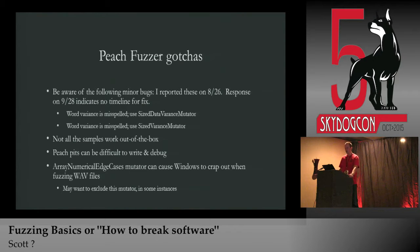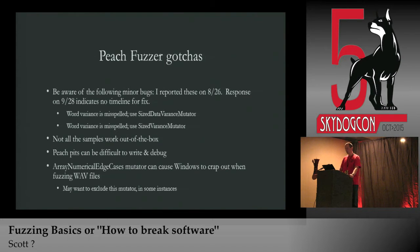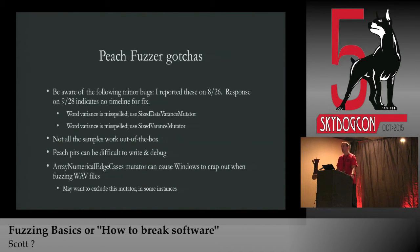The Size Data Variance Mutator and the Size Variance Mutator — the developer just left an 'i' out — so if you want to exclude those you'll have to misspell them as listed on screen so they'll exclude properly. Not all the samples in the Peach Fuzzer samples directory when you install it work out of the box; you've got to tweak them a little. The Peach Pits can be difficult to write and debug since they're XML, but there are some tricks and validation features in Peach Fuzzer that can ease that burden.